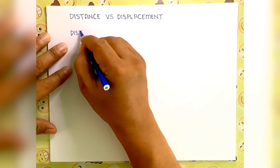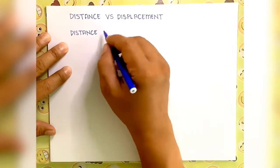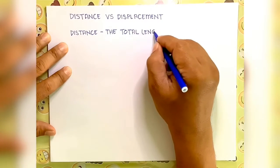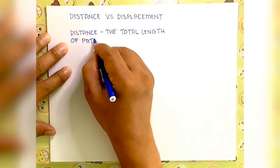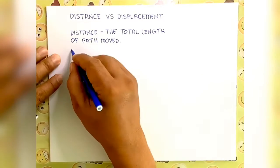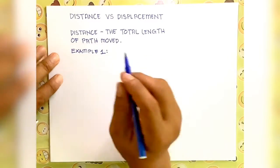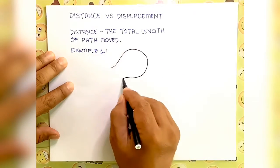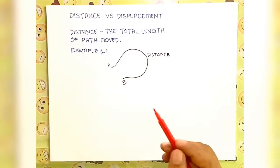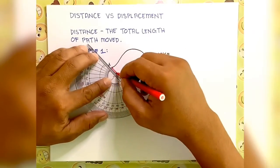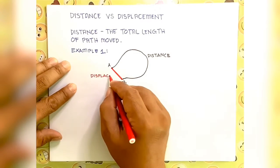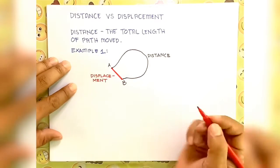Distance simply means the total length of the path of a moving object. As an example, we have a path of a moving object from A to B — this path is called the distance. While the straight line, or the difference between the initial position and the final position from A to B, is called the displacement. So it is a straight line.